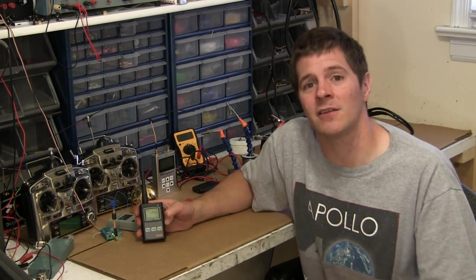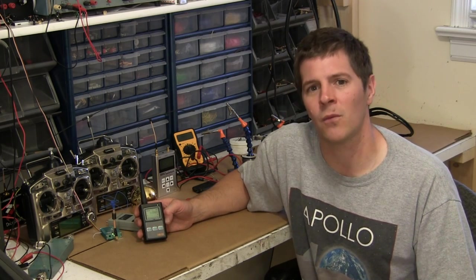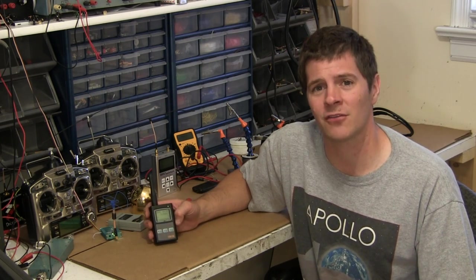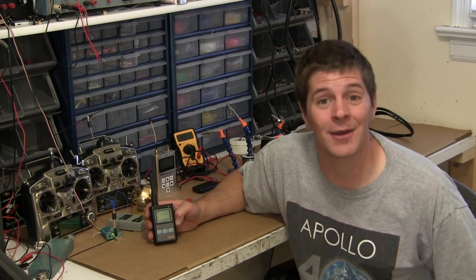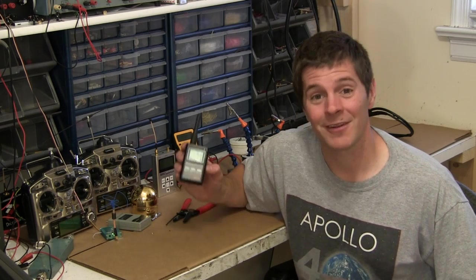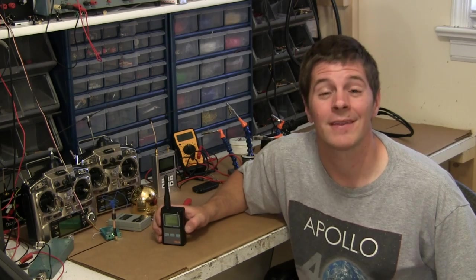And as you can see, this thing is reading zero, zero, zero, why? This is a 2.4 gigahertz transmitter, why is it working? Because I wired it backwards. Double shot that really quick, let's hook it up properly.